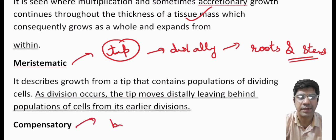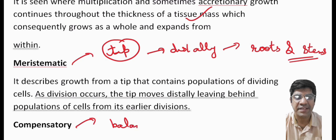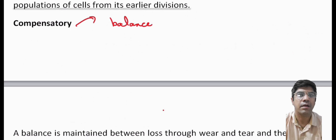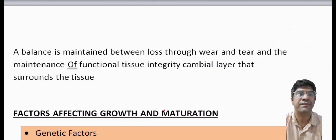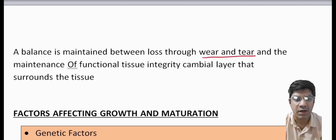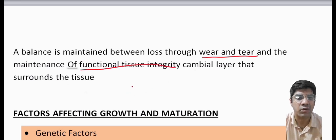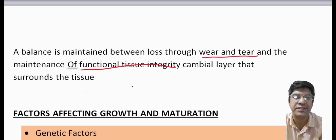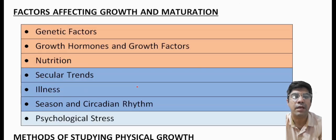Compensatory growth occurs when there is a balance between the loss of tissue due to wear and tear and the maintenance of functional tissue integrity. This type of growth is especially important in cases of regeneration and repair of tissue, such as the renewal of skin cells after injury.